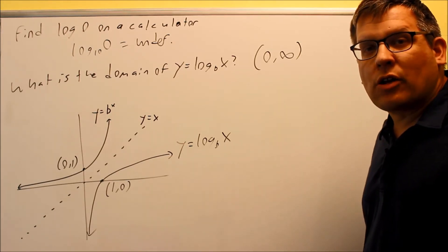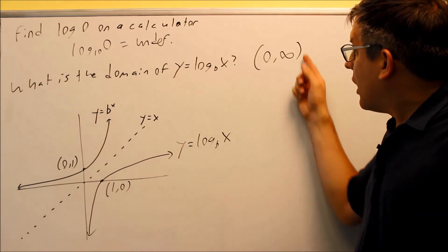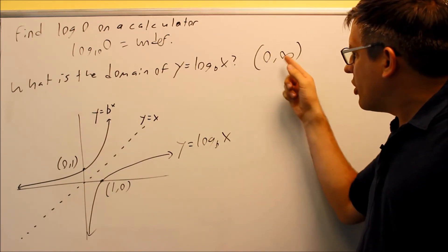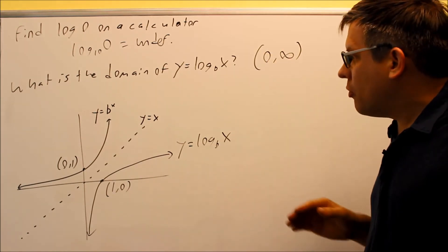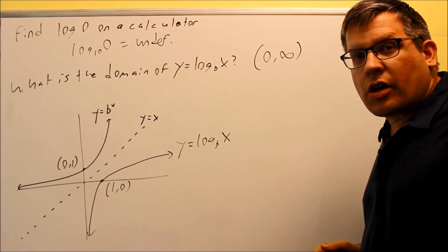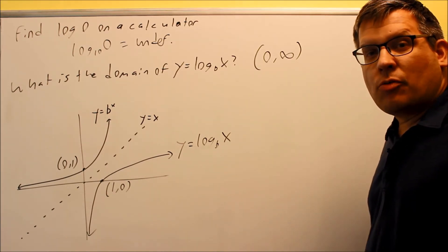So therefore, now we know what numbers we're allowed to put into the log. We're allowed to put in numbers that are positive only, and that would be the domain. So next, we're going to take a look at a couple different examples of finding domain.